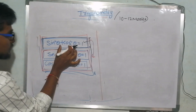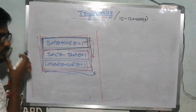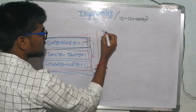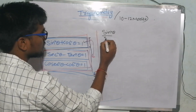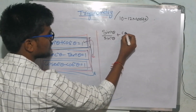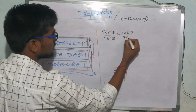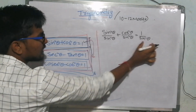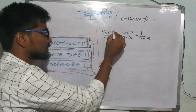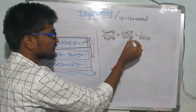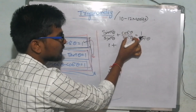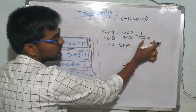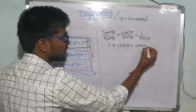First: sin²θ + cos²θ = 1. So, divide both sides by sin²θ. We get: 1 + cos²θ/sin²θ = 1/sin²θ.